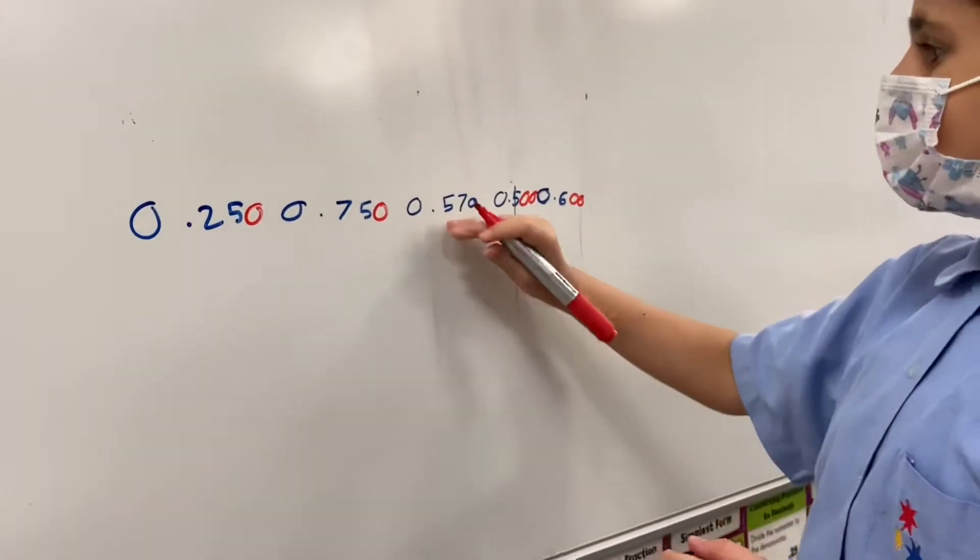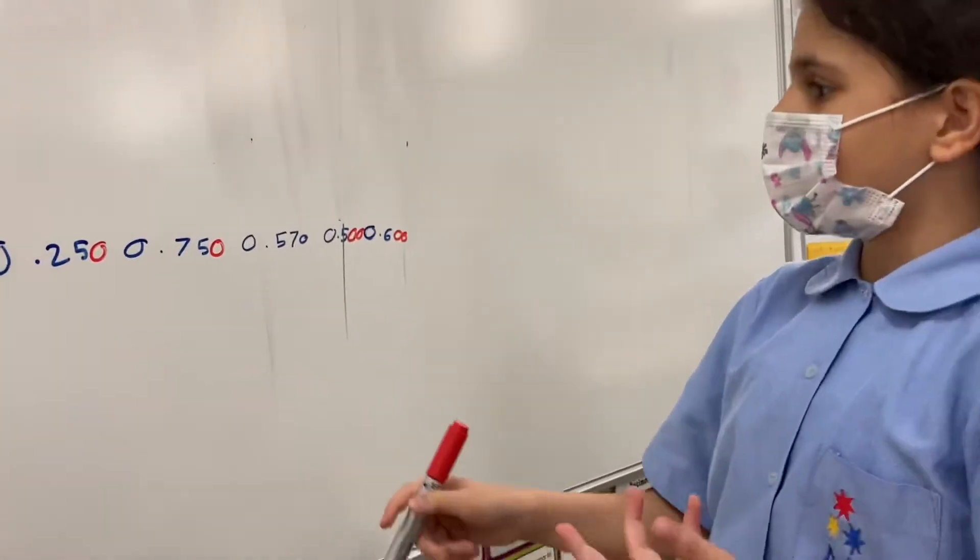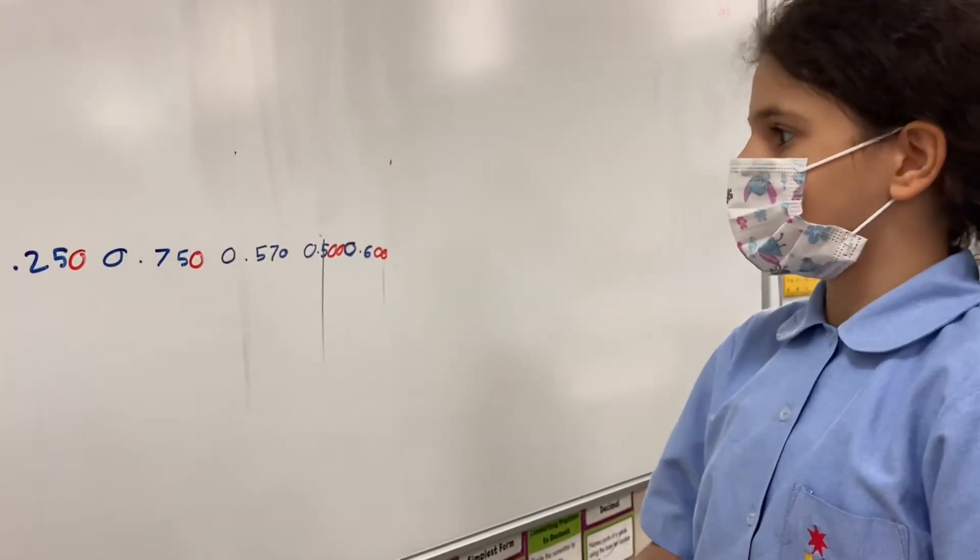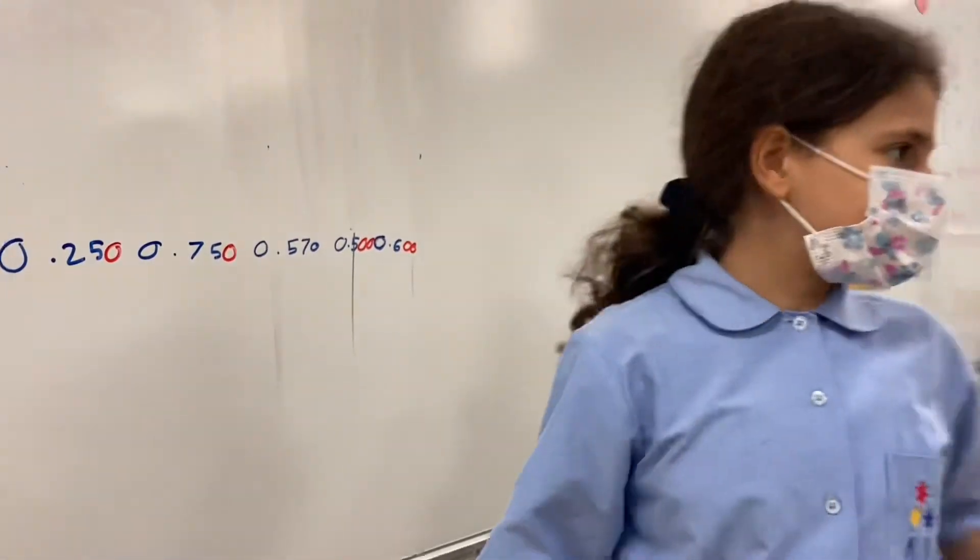We need it to be equal with this. So then we see which one is the biggest, 750 to 50. Which one is the biggest?